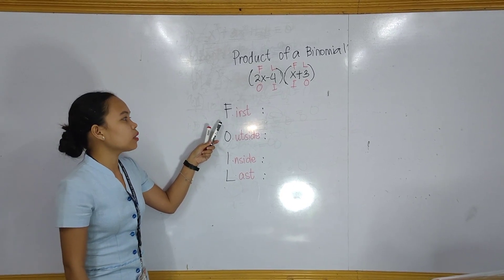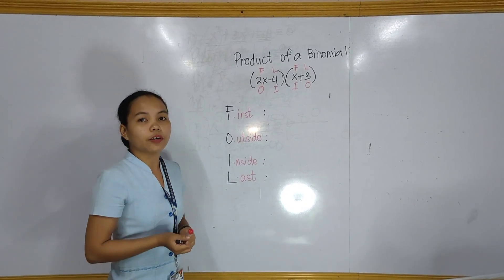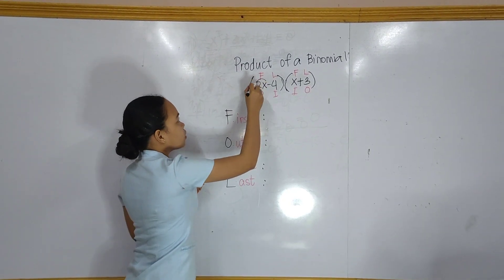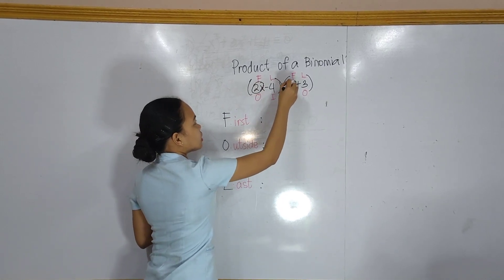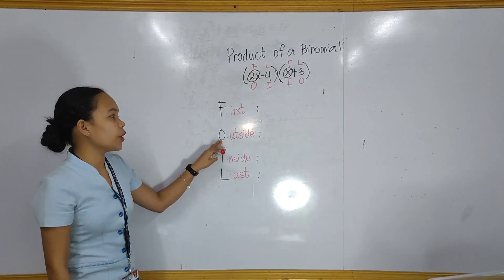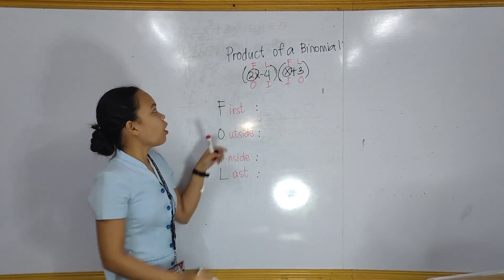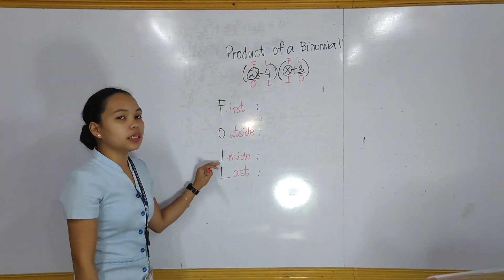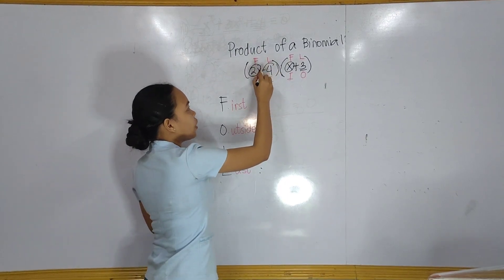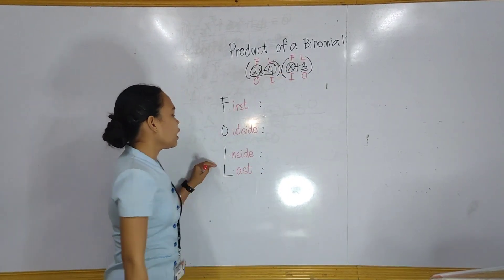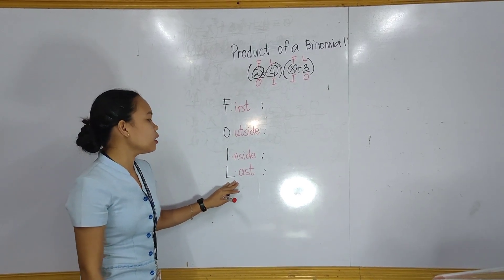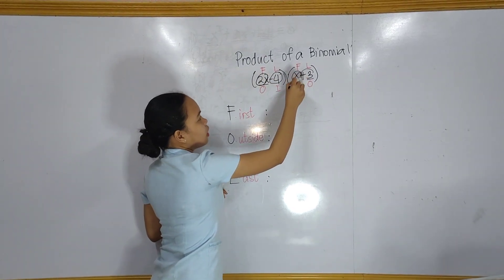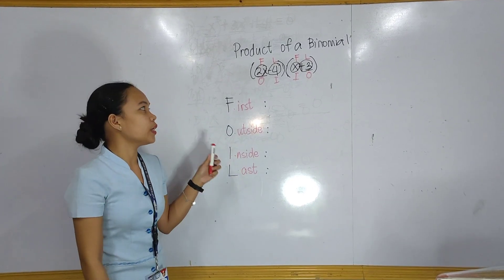F in FOIL method stands for First. The first terms in the given binomial are 2x and x. O stands for Outside, so the outside terms are 2x and positive 3. I stands for Inside, so the inside terms are negative 4 and x. L stands for Last, so the last terms are negative 4 and positive 3.